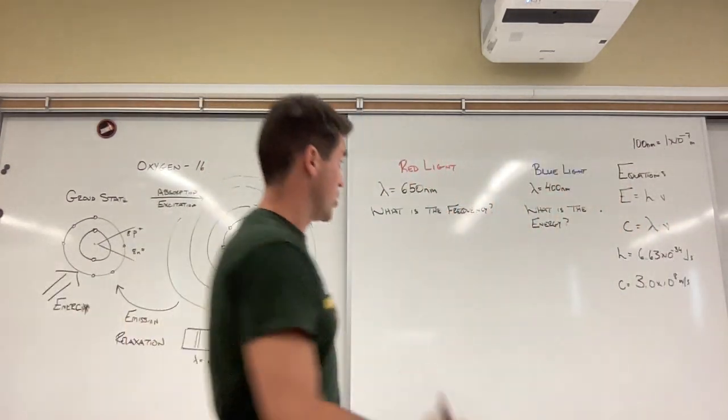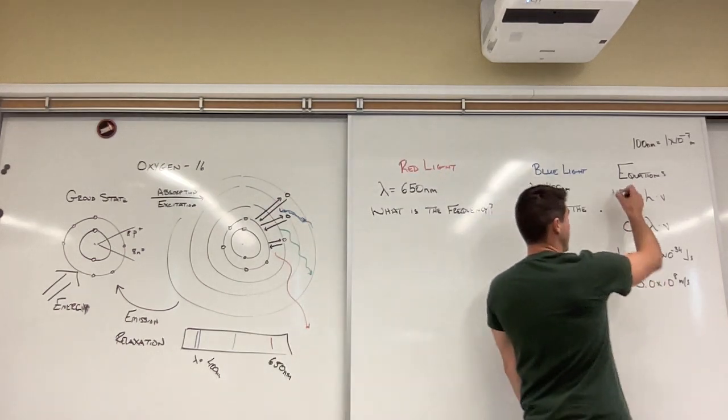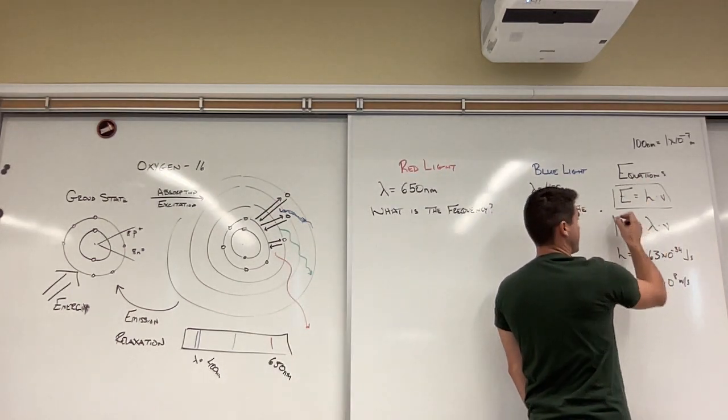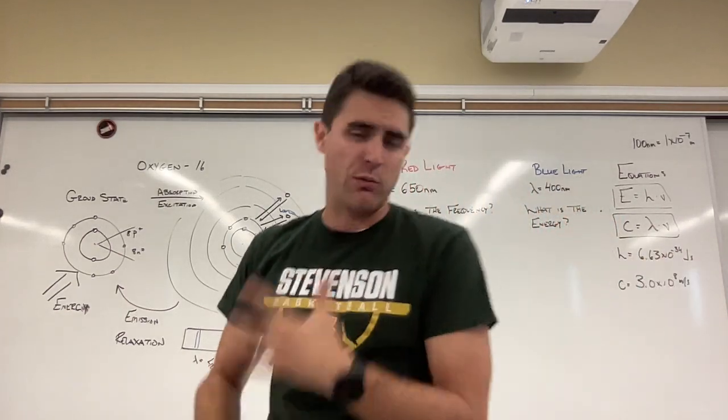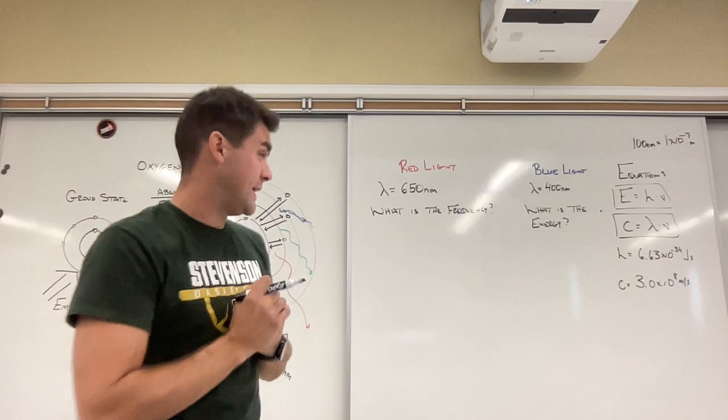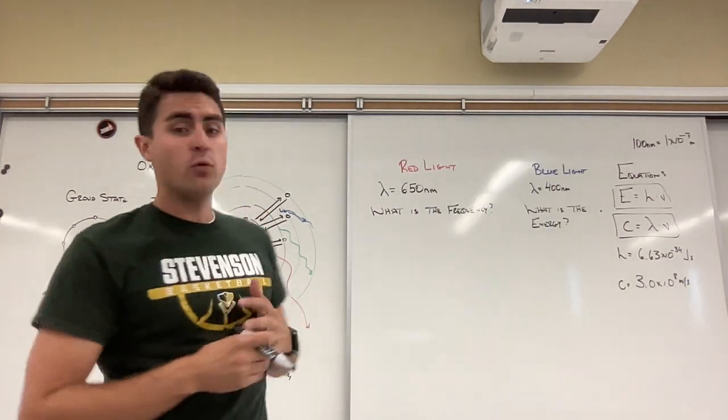I have some equations. These equations are over here. I have my energy equation. Energy equals Planck's constant times frequency and I have my speed of light equation where c, the speed of light, which is a constant in a vacuum, is equal to the wavelength times the frequency of the wave.